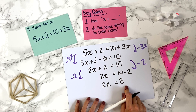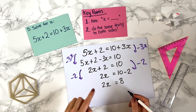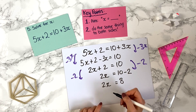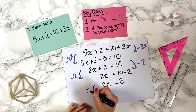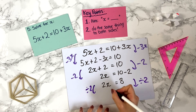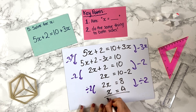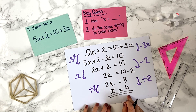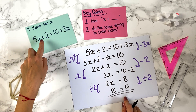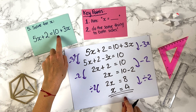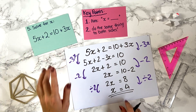We have 2x equals 8. To get x on its own, we divide both sides by 2. 2x divided by 2 is x, and 8 divided by 2 is 4. So x equals 4. You can check: 5 times 4 plus 2 is 22, and 10 plus 3 times 4 is 10 plus 12, which is also 22. Both sides equal 22, so we're correct.